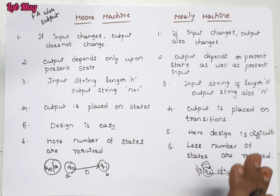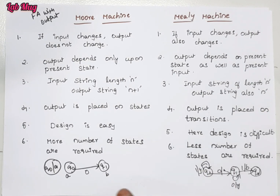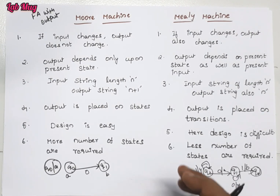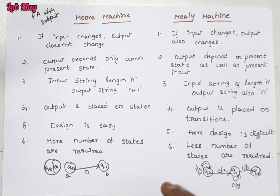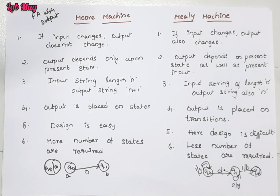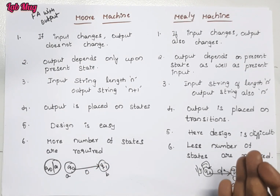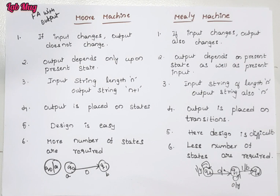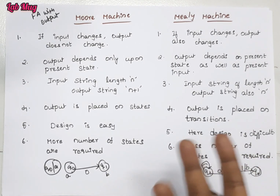So those are the differences between Moore machine and Mealy machine. Both are very important for exams — whether semester exams or competitive exams. When diagrams are given, we should be able to recognize whether it is a Moore machine or Mealy machine. For that, reviewing the examples from the previous Moore machine and Mealy machine classes will give you clear understanding. If this video was helpful, please like and share the channel. Thank you.